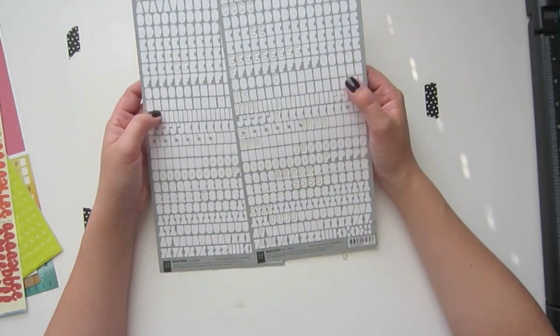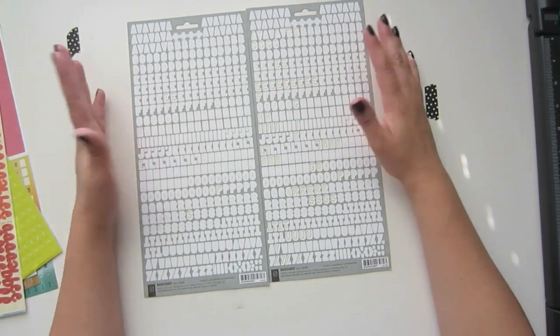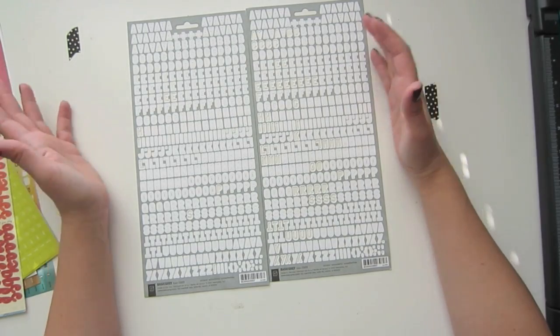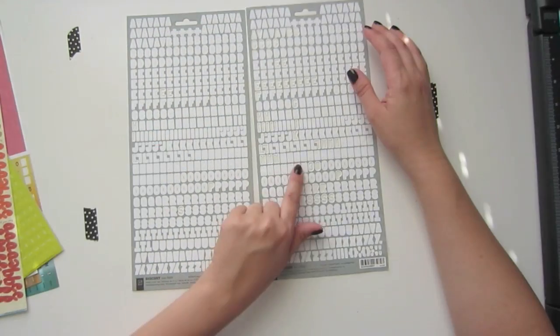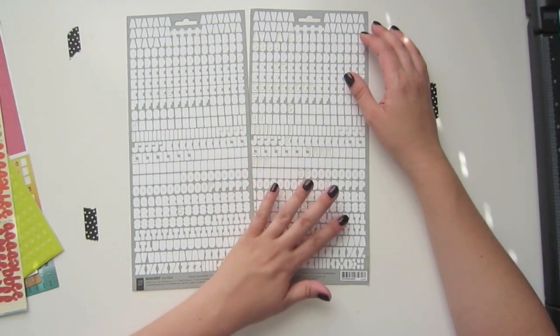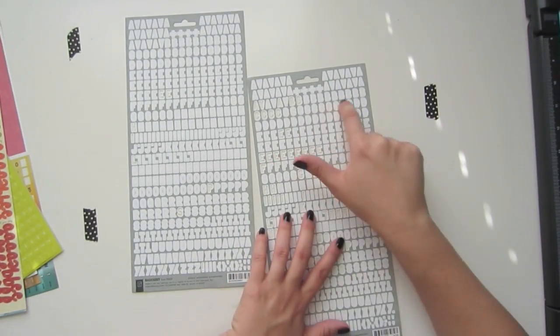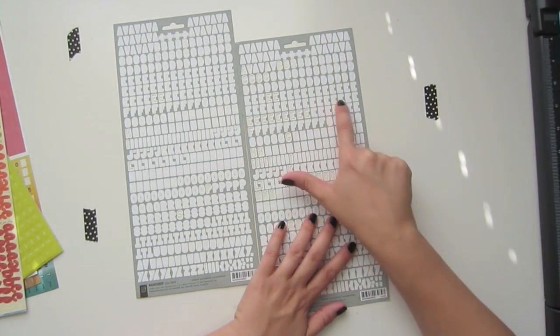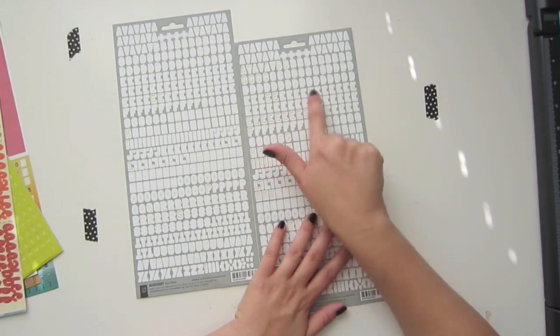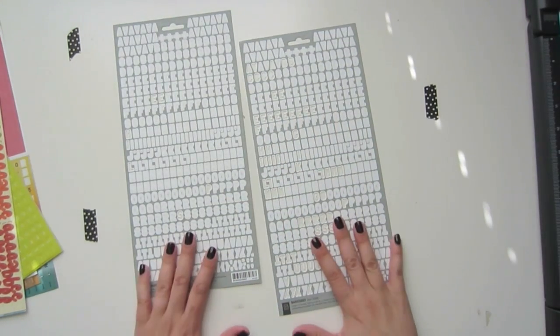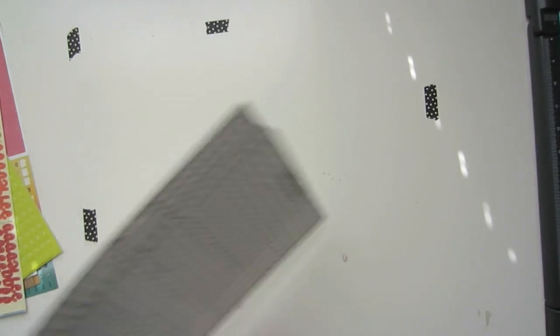Another one that I like to use are these basic gray letters, and I have them in white. Sometimes you just need white on a colorful background. I really like the shape of these. These are only uppercase, but look at all the letters that you get. You get a ton. Look at all these E's, three rows of E's. That's awesome. I think these are $2 each.